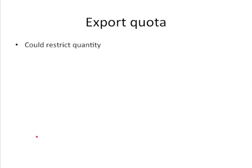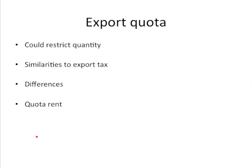An export quota has similar effects to an export tax because you are reducing exports. You're going to reduce domestic prices, hurt producers, and help consumers. But there are important differences, and it essentially has to do with tax revenue — the government is not gaining any tax revenue with an export quota directly.